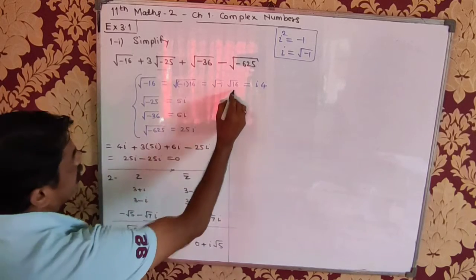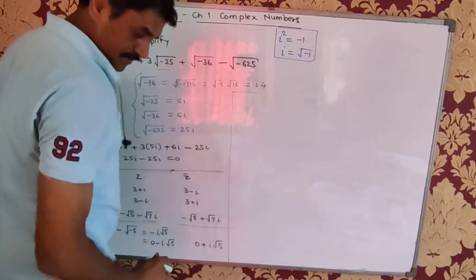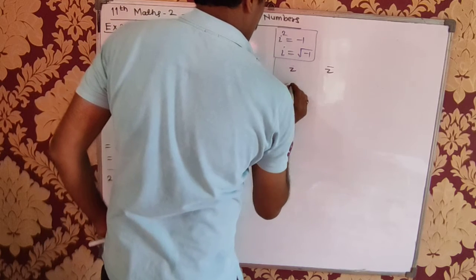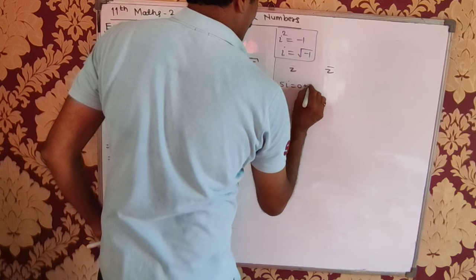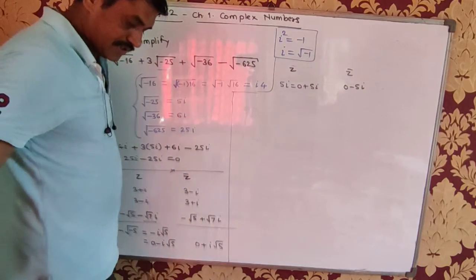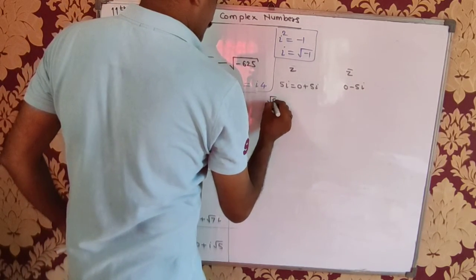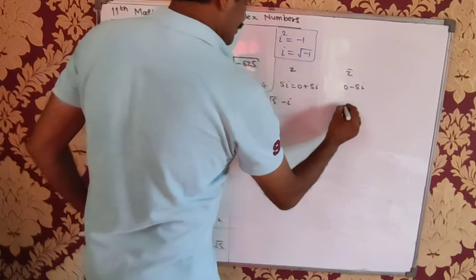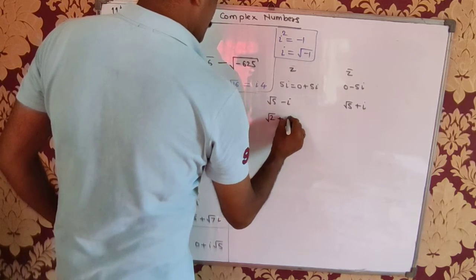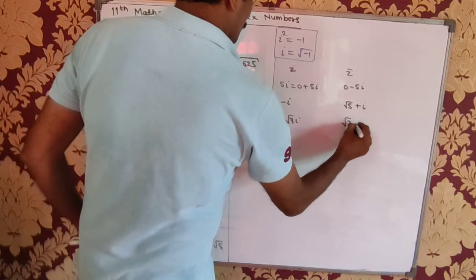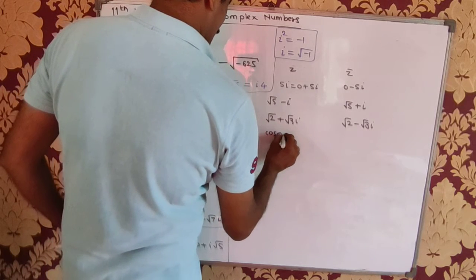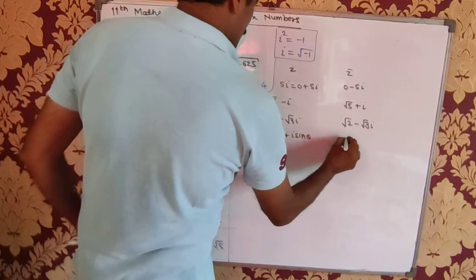Next: 5i is 0 + 5i, so its conjugate is 0 − 5i. Then √5 − i√5, conjugate is √5 + i√5. Then √2 + √3 · i, conjugate is √2 − √3 · i. And cos θ + i sin θ, conjugate is cos θ − i sin θ.